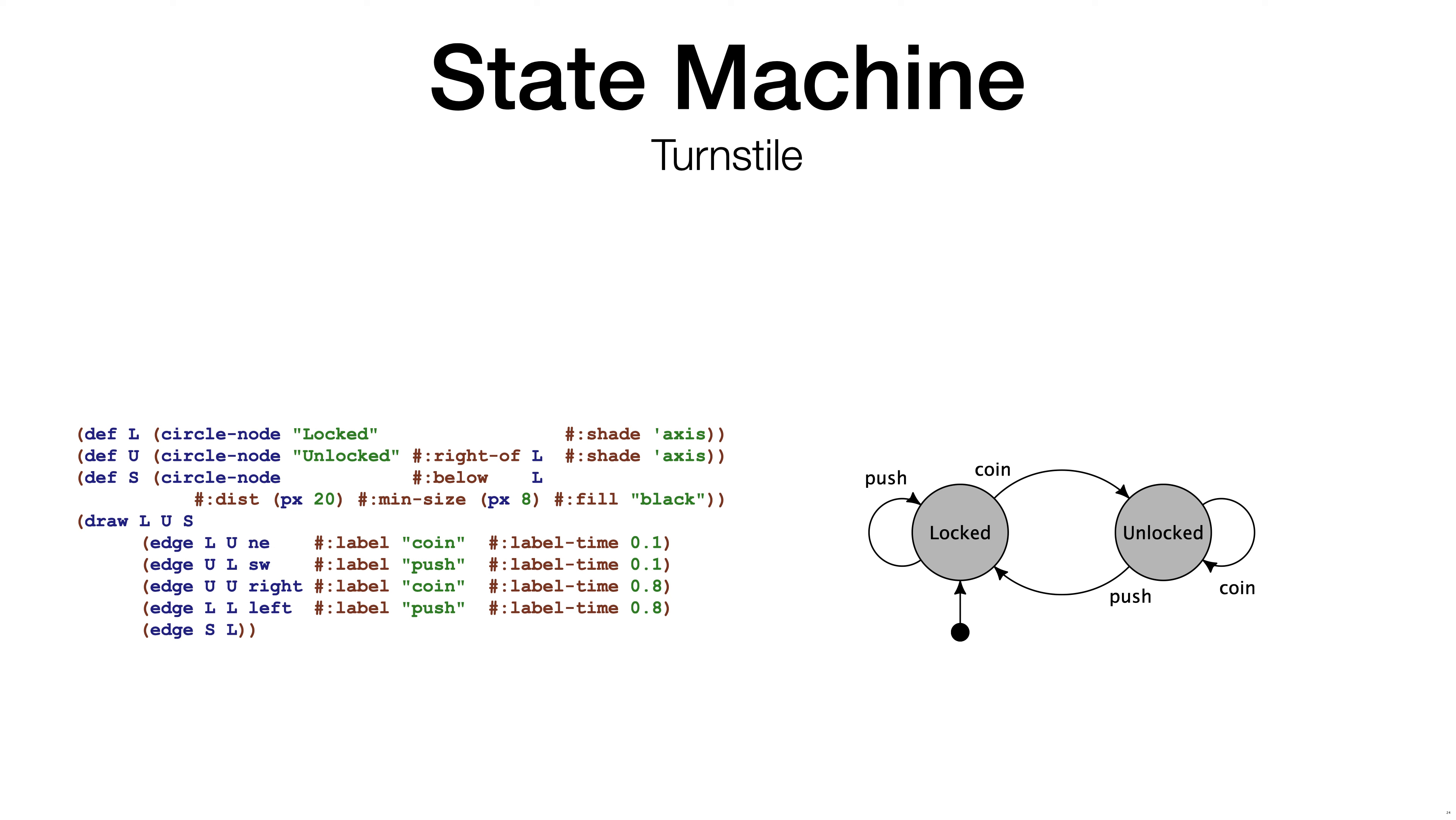In the first edge, we draw from L to U, from the locked to the unlocked state. The NE Northeast means that the edge leaves the circle node in the direction of Northeast, up and to the right. The label is coin, and the label-time indicates whether we are going to put the label at the beginning or the end of the edge. The beginning of the edge is 0 and the end is 1. Here, 0.1 means just after the beginning of the edge.